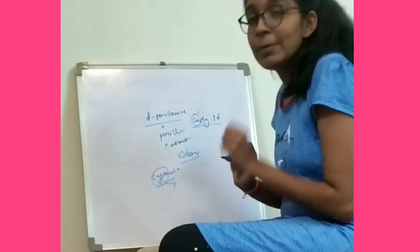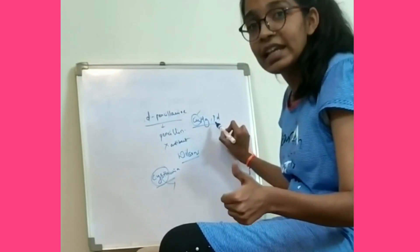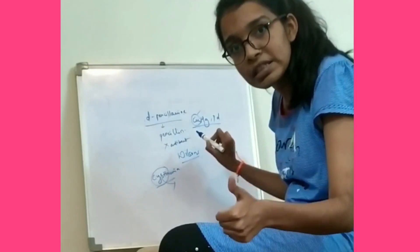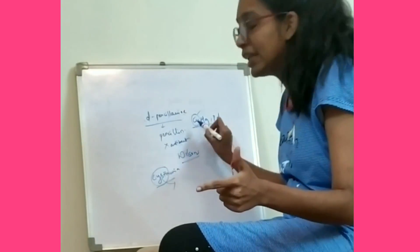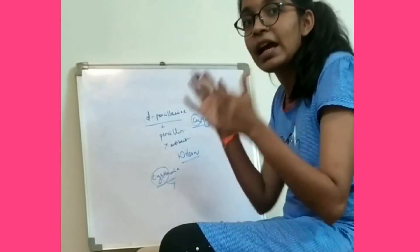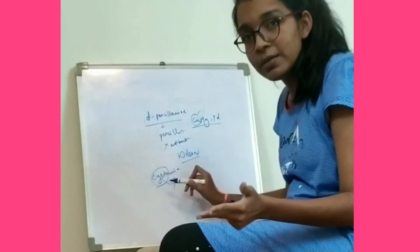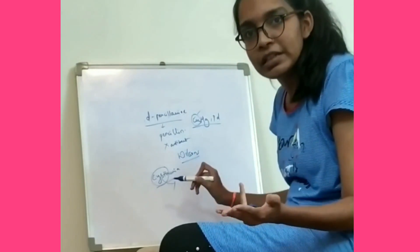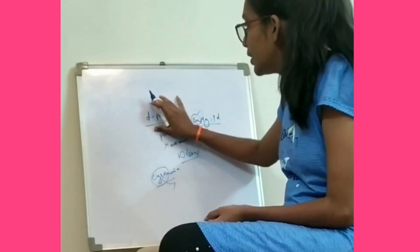The uses of D-Penicillamine are: in copper, mercury, and lead toxicities; in Wilson's disease, where copper is getting accumulated in brain and liver; and in cystinuria and rheumatoid arthritis. These are the four uses.